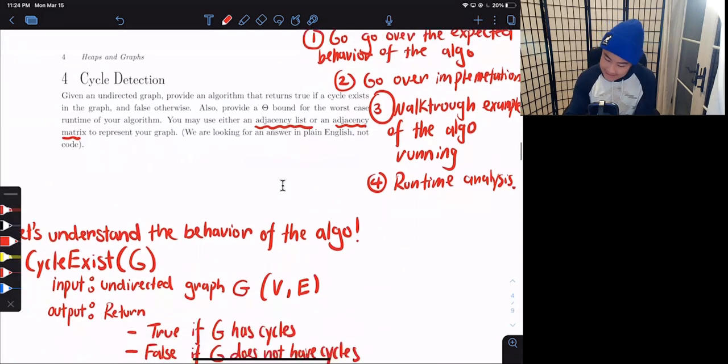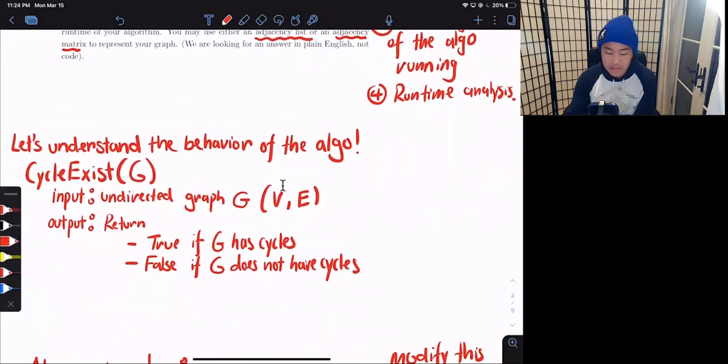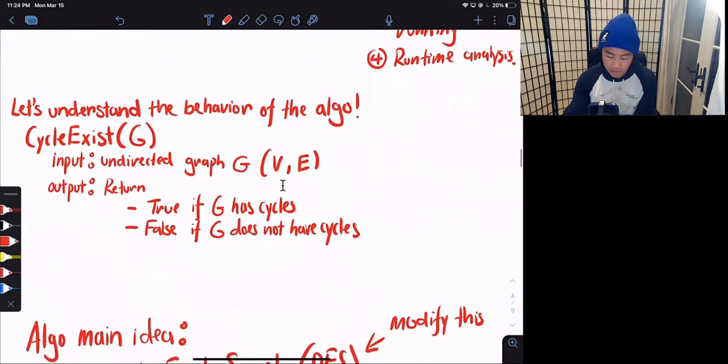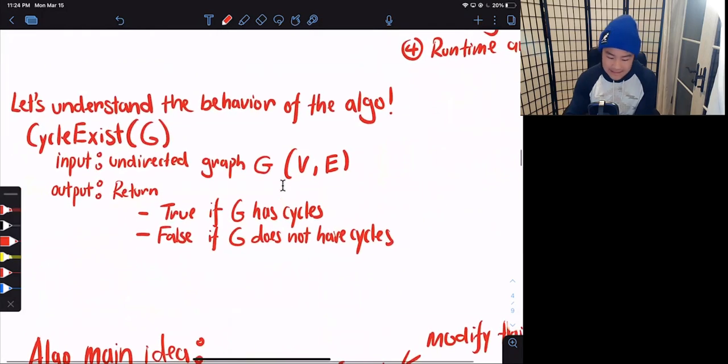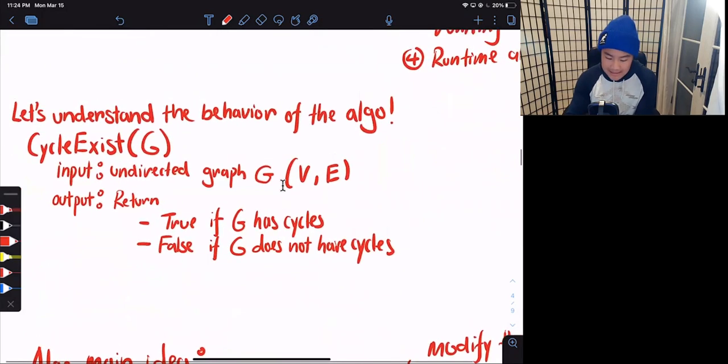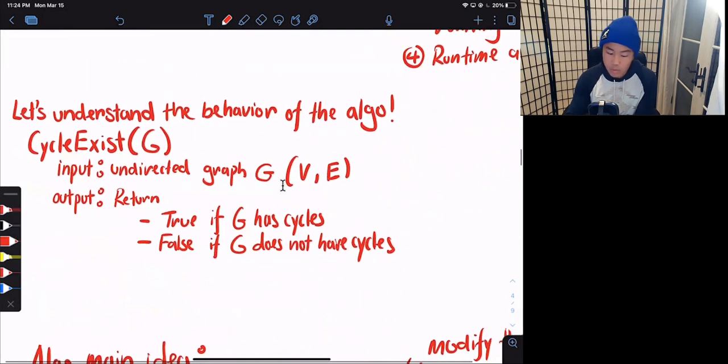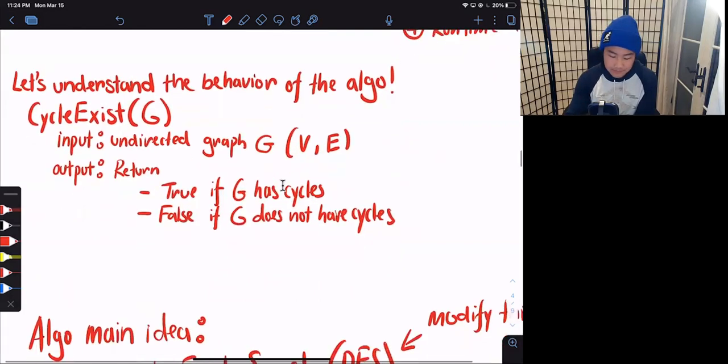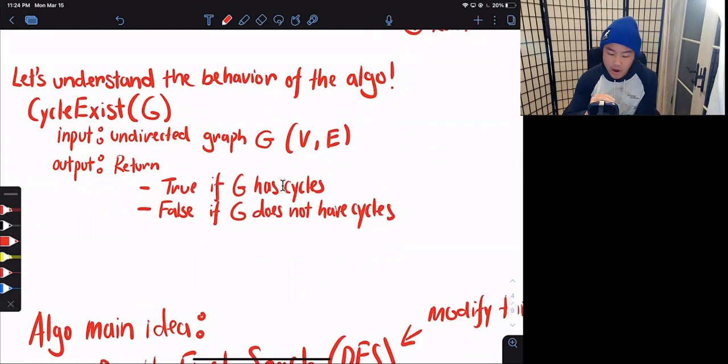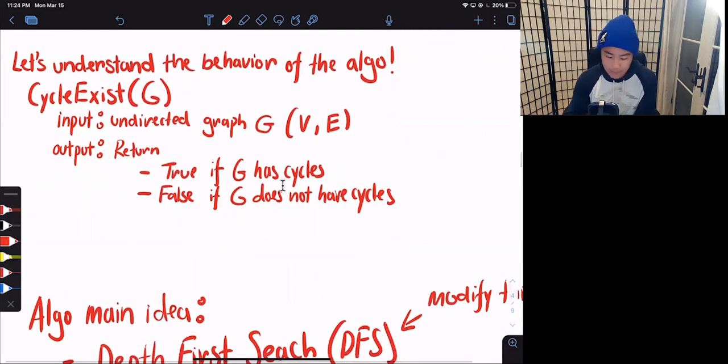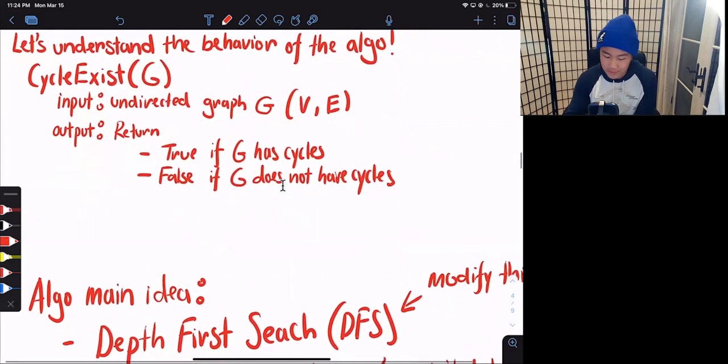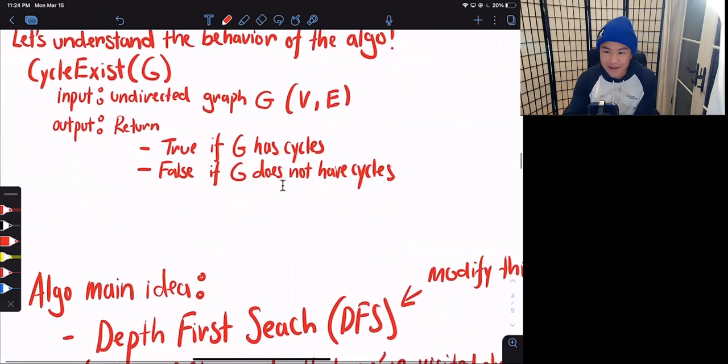Let's first start by understanding the behavior of the algorithm. So let's name this algorithm cycle exist. And cycle exist takes in the input G, which is an undirected graph with a set of vertices V and a set of edges E. And the output of this algorithm is true if G has cycles, has at least one cycle, it will return true. And false if G does not have cycles.